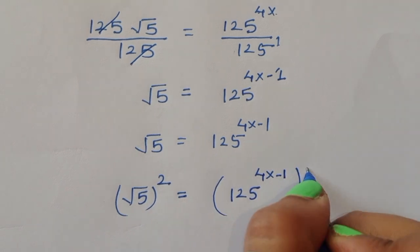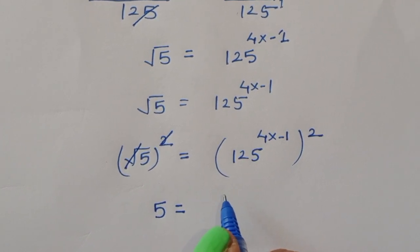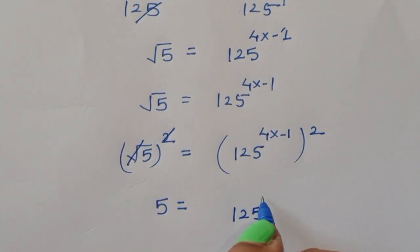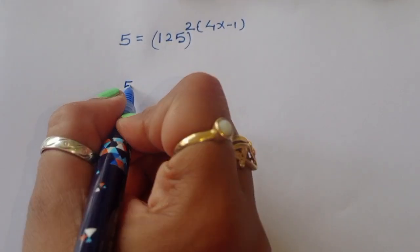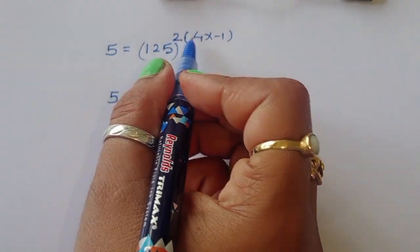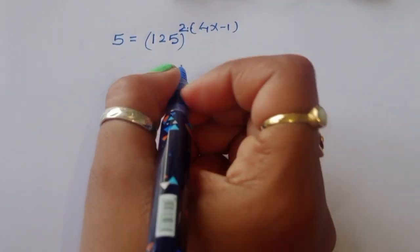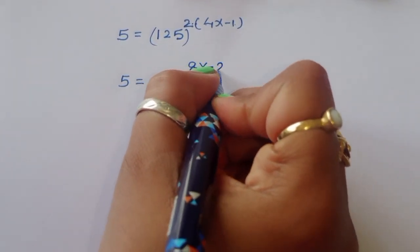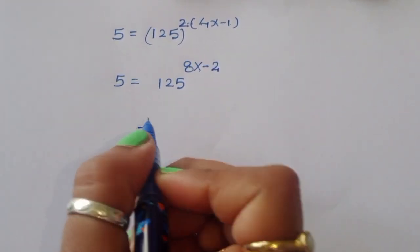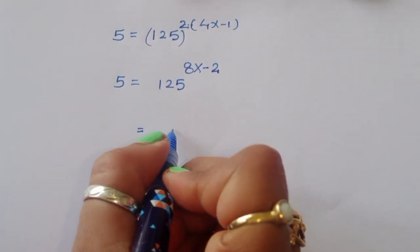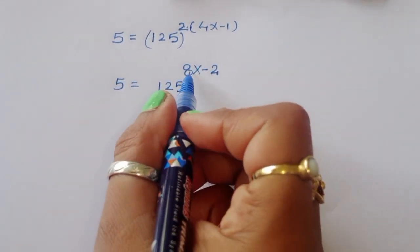Now the square is cancelled from the square root, so 5 is equal to 125 square to the power 4x minus 1. So 125 squared to the power 4x minus 1, and we can multiply this term: 125 power 8x minus 2. Now we are converting 125 in power form, so we get 5 power 3, giving us 5 power 3 to the power 8x minus 2.